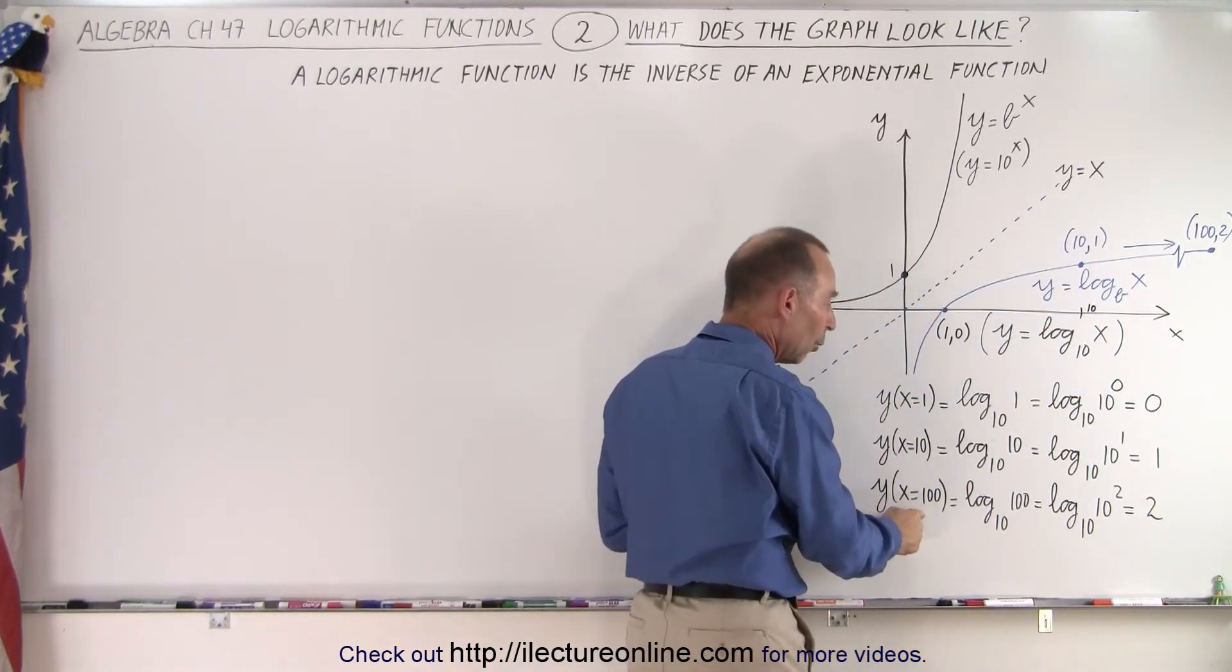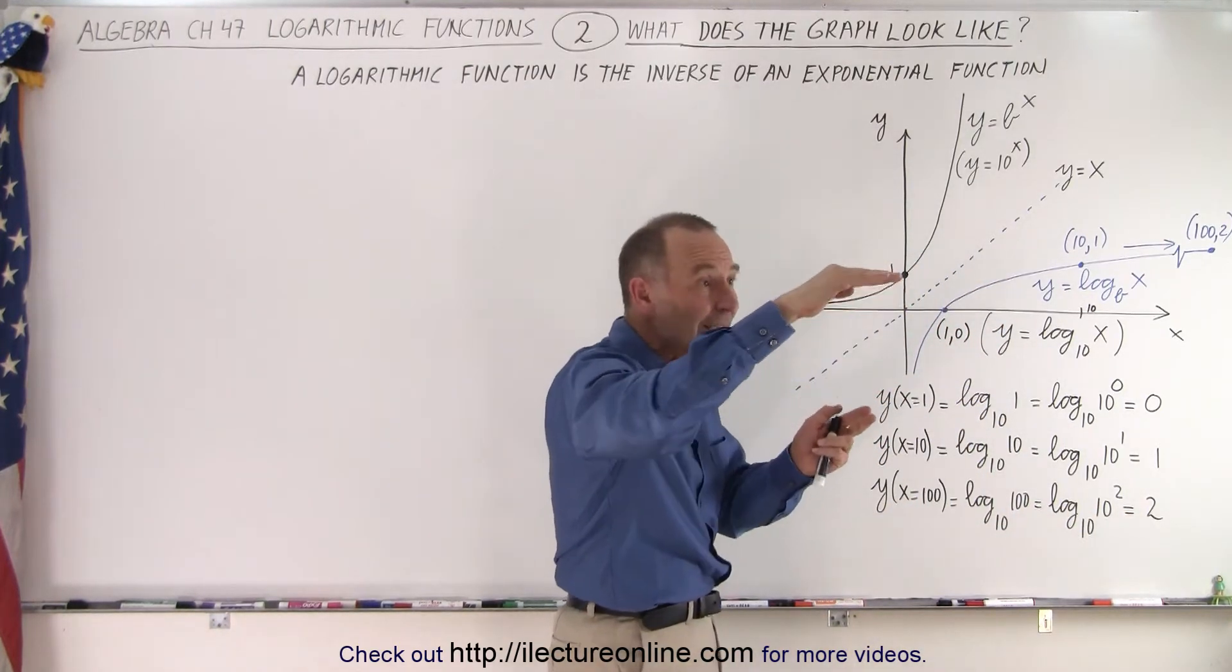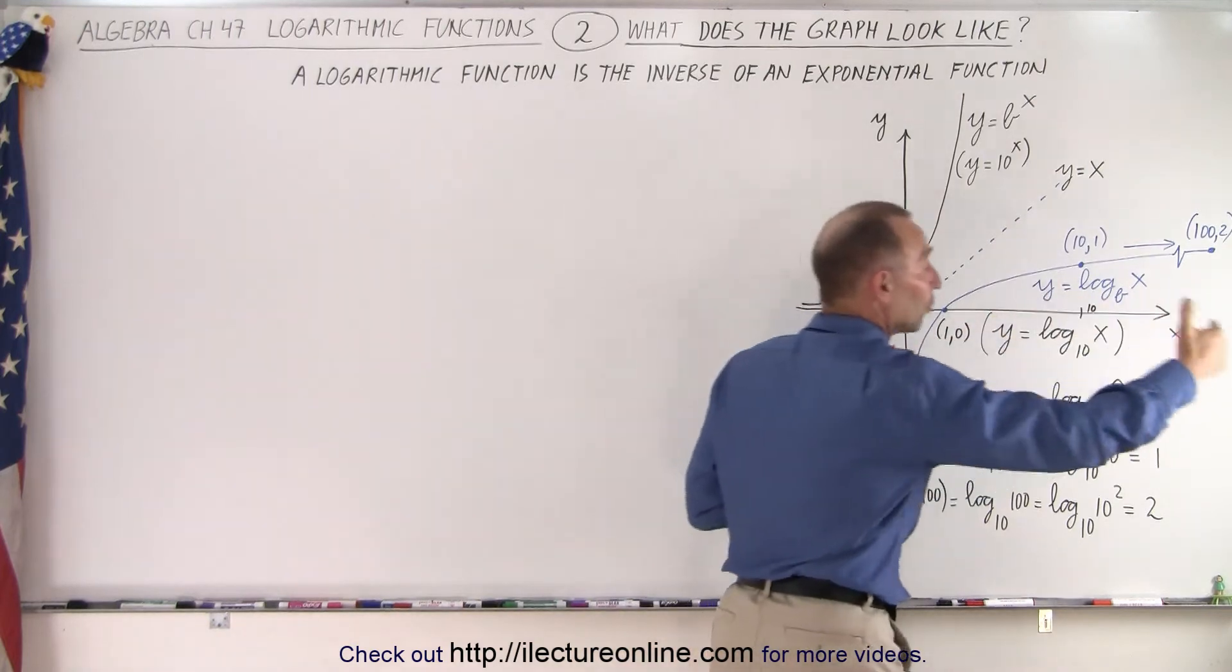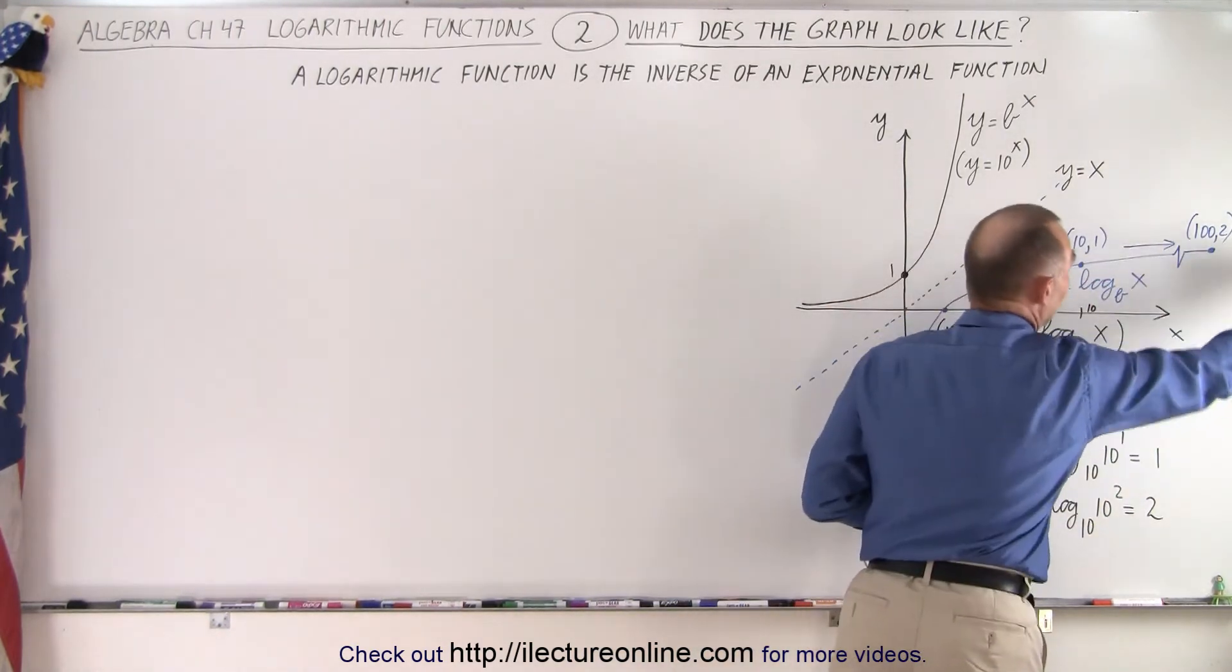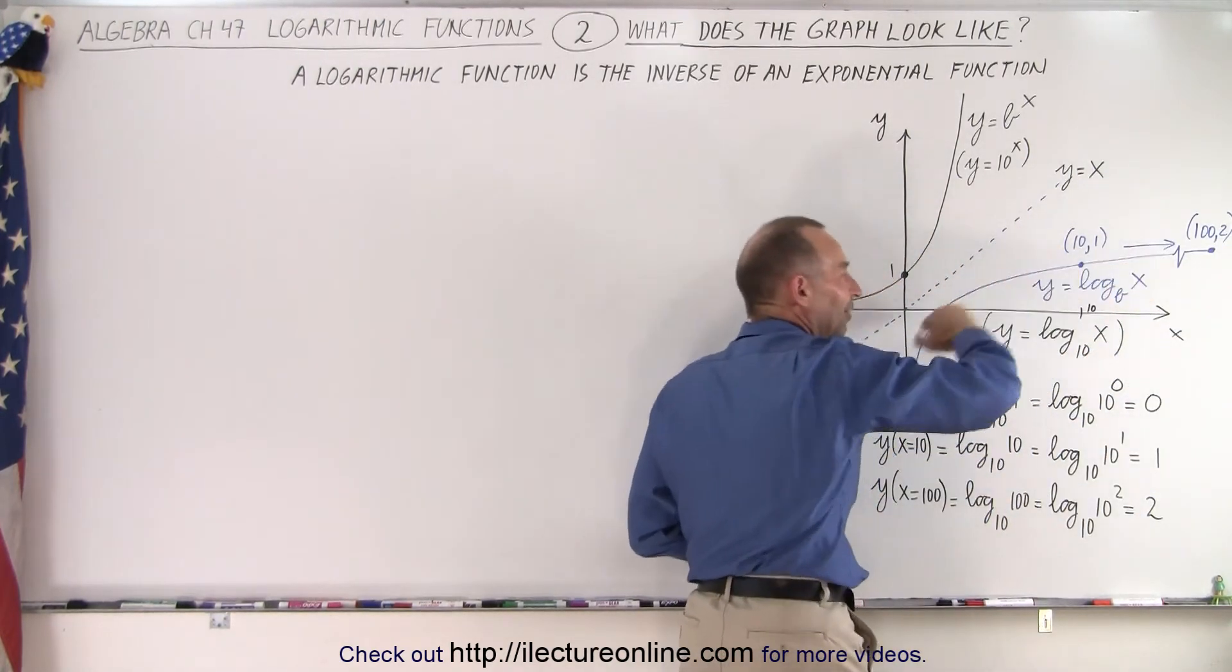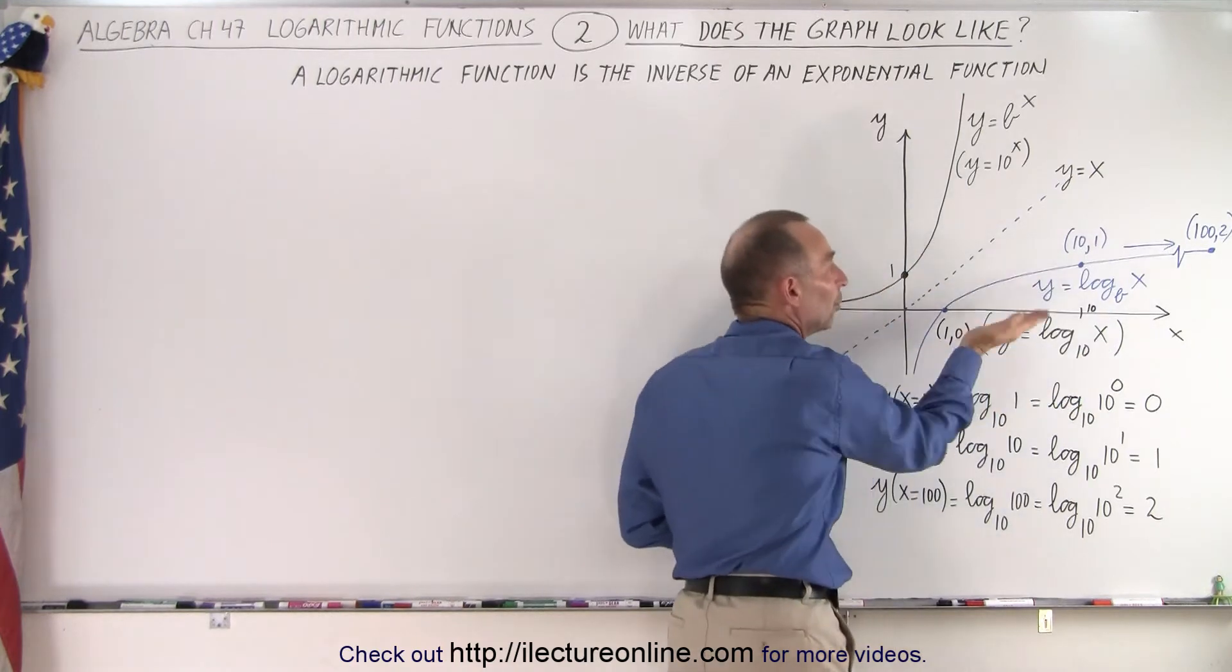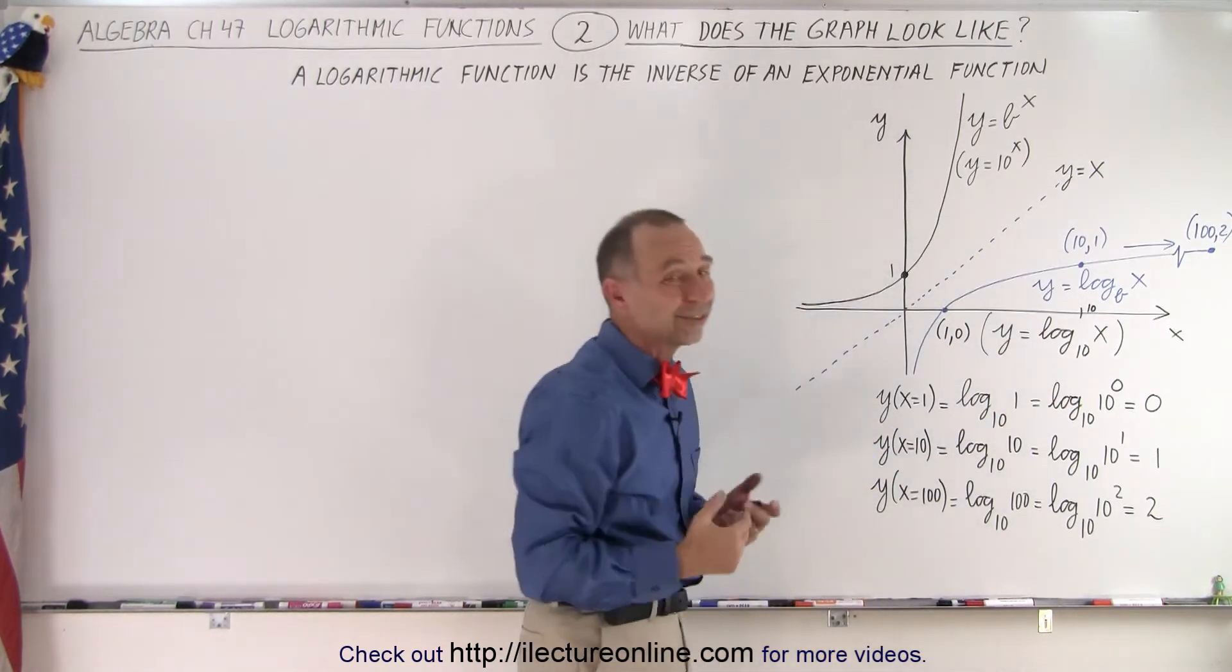And then, when x is 100, y is equal to 2. So, you can see that it gets less and less and less steep, because you have to go much farther to the right to gain one more unit in the y direction. When x is equal to 100, then y will be equal to 2. And that gives you kind of the feel for the shape of that curve, which is the exact mirror image of the exponential function, y equals 10 to the x.